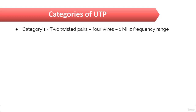POTS cable still exists in some parts of the public switched telephone network, that is the PSTN, and supports signals limited to the 1 MHz frequency range. The category word is often shortened to CAT. Today, any cable installed should be a minimum of CAT 5e. Let us see what are the different categories of UTP cable.